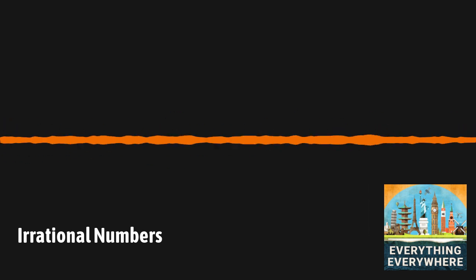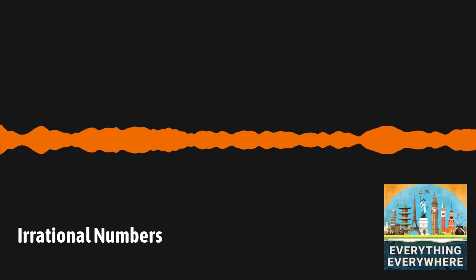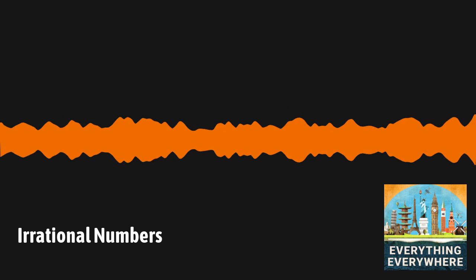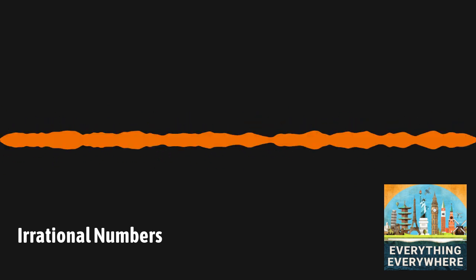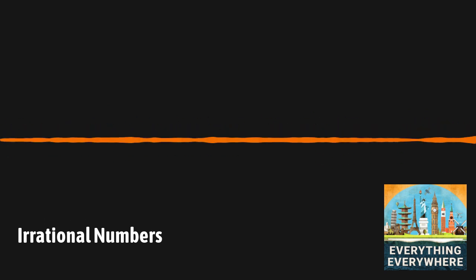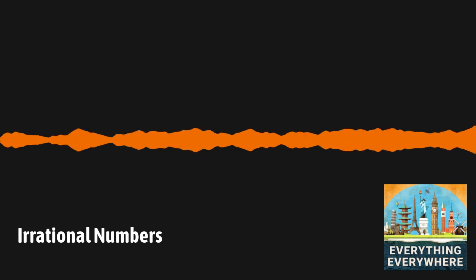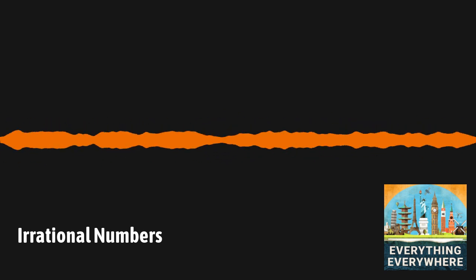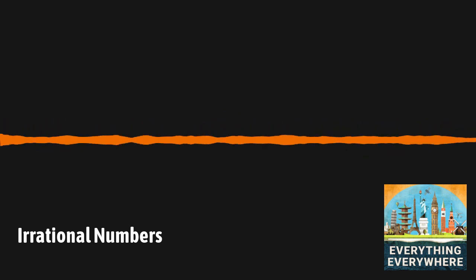Before I jump into a discussion of the history of irrational numbers, I should probably explain what an irrational number is. An irrational number is any real number that cannot be expressed as the ratio of two integers. That's it. That's the definition. I've tangentially mentioned irrational numbers several times before in previous episodes, but I've never dealt with them explicitly until now.